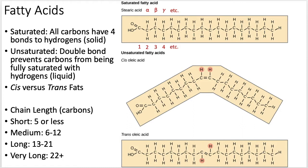Let's talk a little bit about fatty acids. Big, long carbon chains — pretty straightforward structure. You have your carboxylic acid on the end and just a bunch of carbons. But you could have a double bond in there, you could have a couple of double bonds. So let's talk a little bit about that.